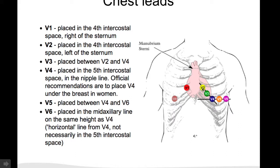V2 on the left of the sternum. V4 in the mid-clavicular line in the 5th intercostal space. V3 is in between V2 and V4. V6 is in the mid-axillary line horizontal from V4, and V5 is in between.